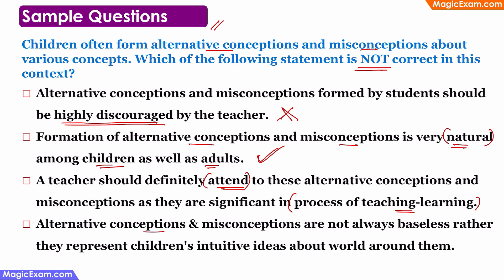Statement four: alternative conceptions and misconceptions are not always baseless; rather, they represent a child's intuitive idea about the world around them. This is a correct statement — for example, not wearing black in summer is not baseless, there is a scientific reason, but because the child may not know it, they hold an alternative conception. So among the given statements, only statement one is not correct, and therefore the answer is option one.